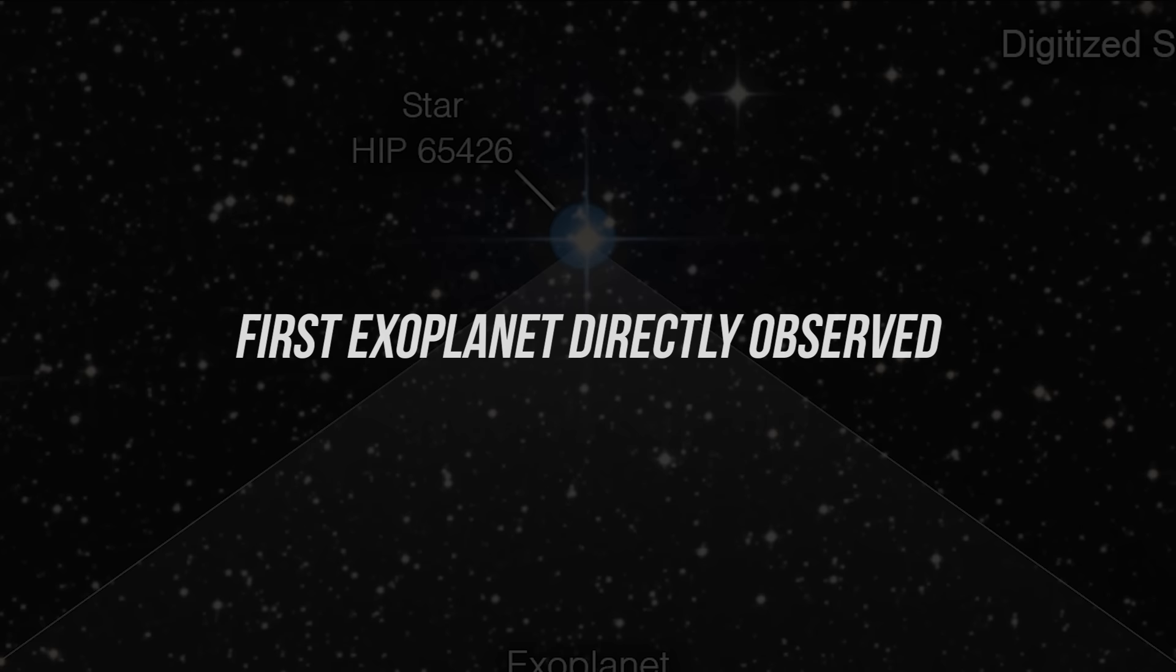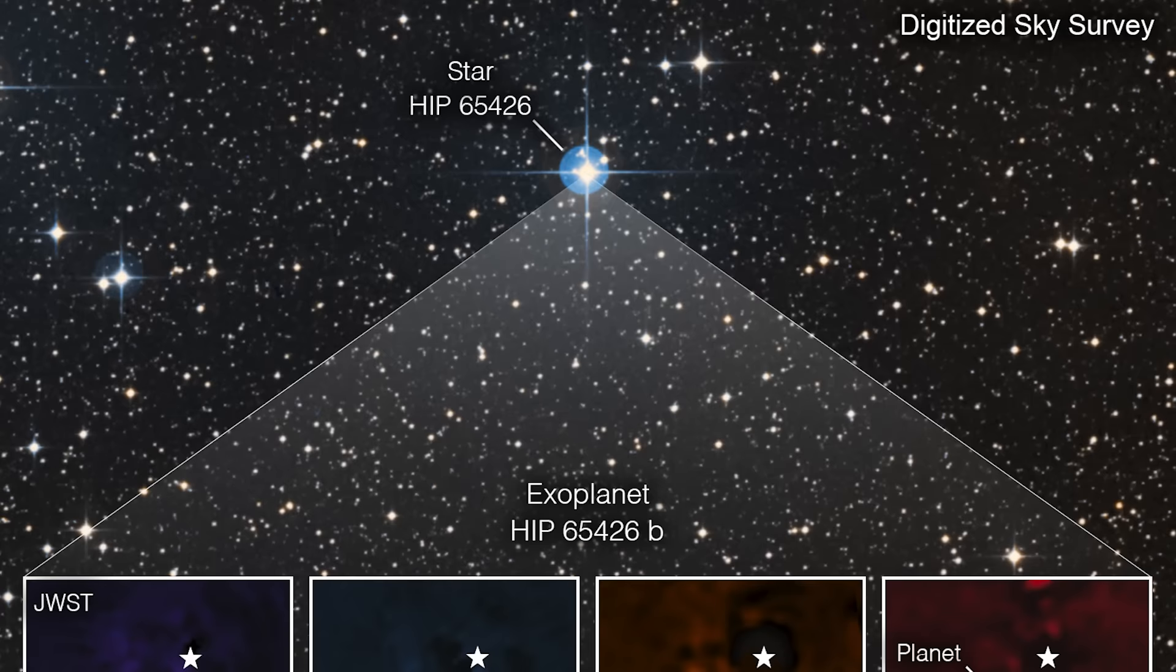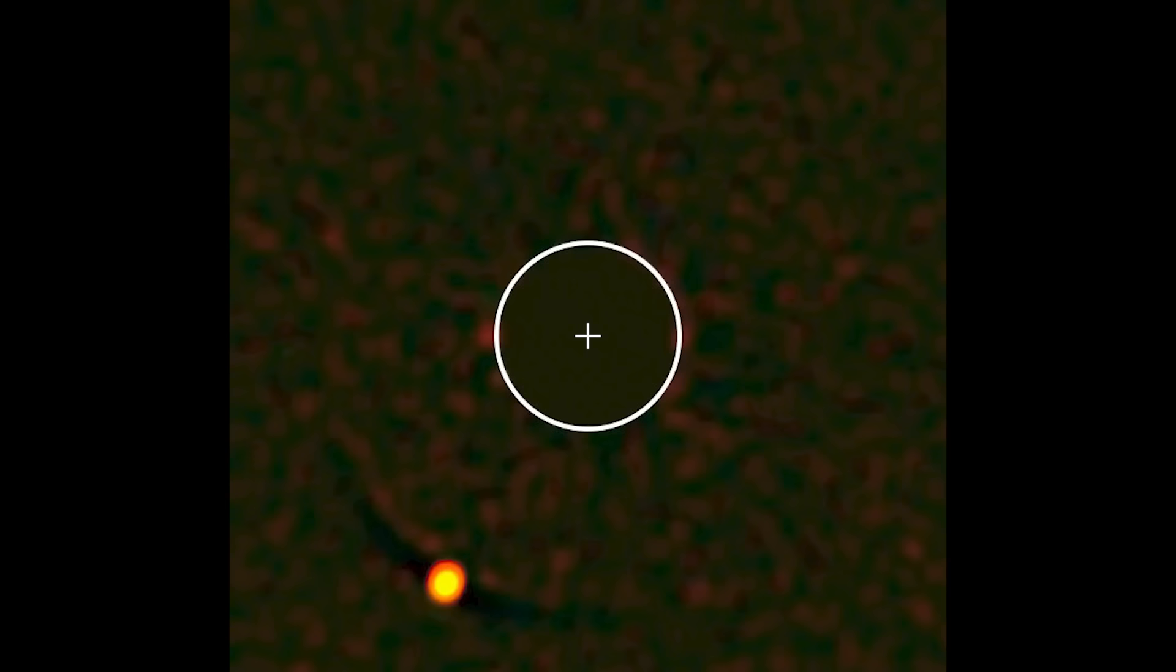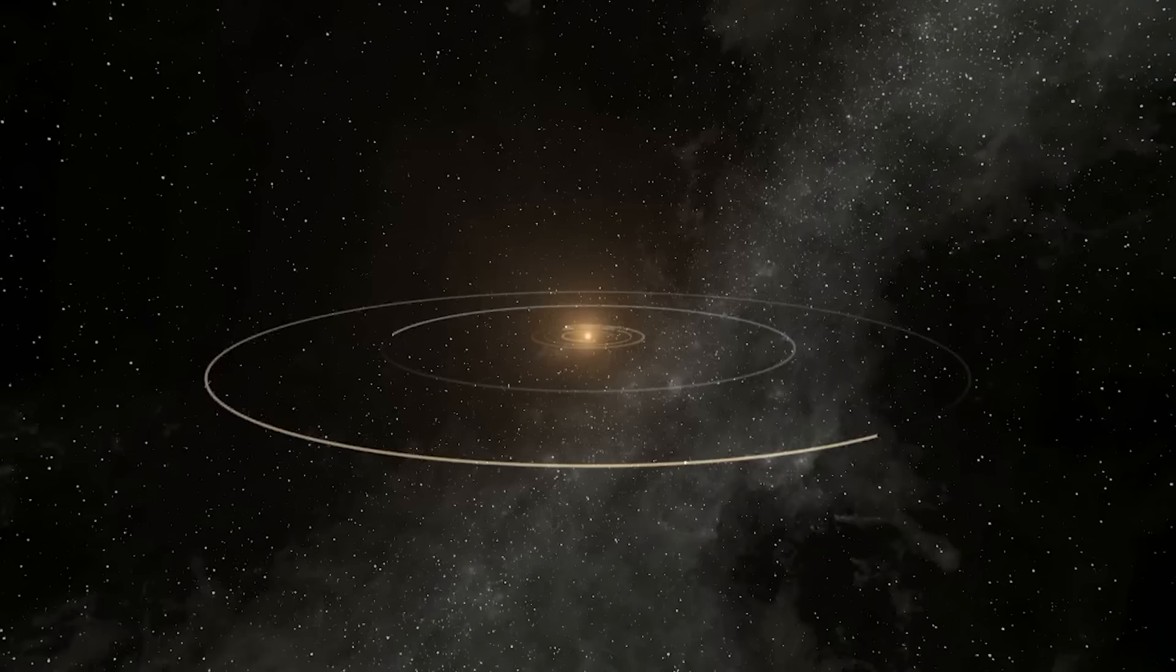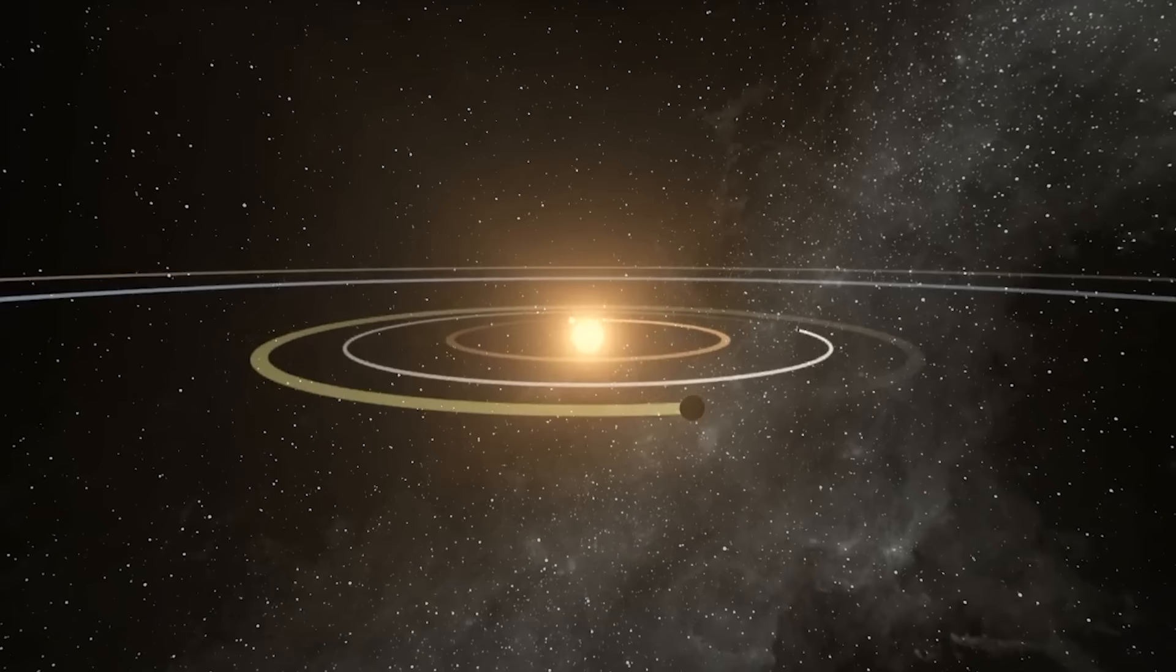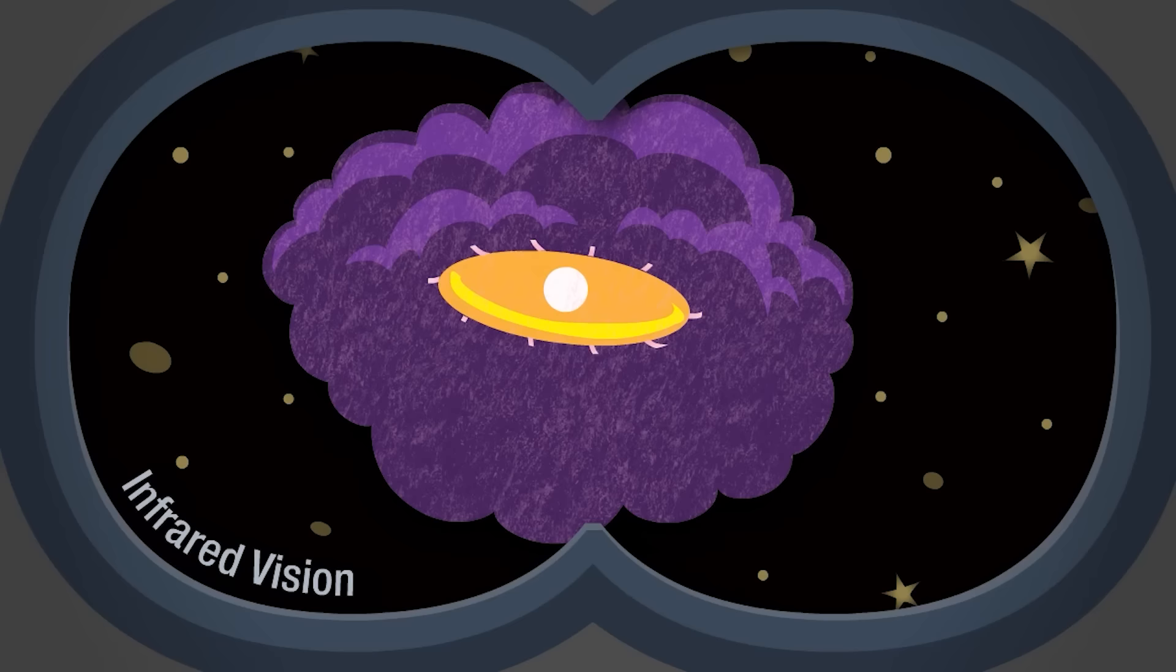385 light years away from Earth, with a mass 6 to 12 times heavier than Jupiter, sits HIP 65426, an exoplanet that the James Webb telescope recently captured. It's the very first exoplanet outside of our solar system that the telescope has taken a direct image of. Capturing direct images of exoplanets is extremely challenging, mainly because the stars that they're right next to are so much brighter. This means only James Webb's near-infrared capabilities can cut through this light to reveal the faint planets in such detail.